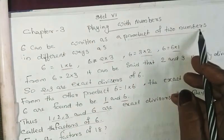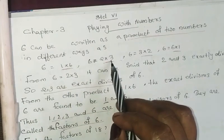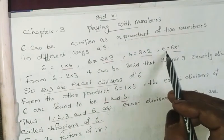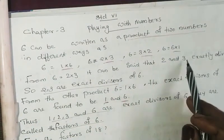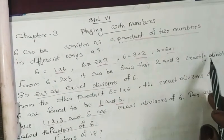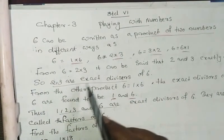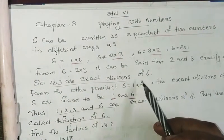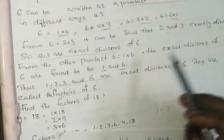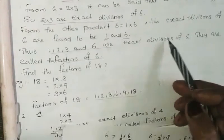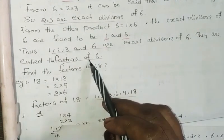6 can be written as the product of 2 numbers in different ways: 6 is equal to 1 into 6, 6 is equal to 2 into 3. From 6 is equal to 2 into 3, it can be said that 2 and 3 exactly divide 6. From the other product, 6 is equal to 1 into 6, the exact divisors of 6 are found to be 1 and 6. Thus 1, 2, 3, 6 are exact divisors of 6. They are called factors of 6.